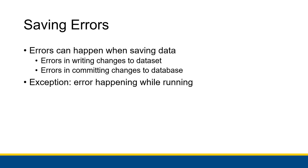We say that an exception is an error that happens while the program is actually running — not like a logic error. An exception might be considered a specific type of runtime error. For example, the hard drive crashing while you were trying to save a file, or trying to open a file that doesn't exist, or trying to divide by zero. These have a lot of overlap with runtime errors. An error happening while an application is running is known as an exception.